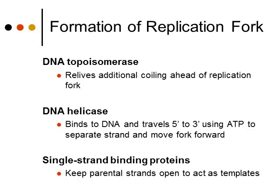Each origin of replication forms a replication bubble where the two DNA strands separate, with two replication forks on each side of the bubble. At the replication fork, there are three important types of proteins. Right ahead of the replication fork, we have an enzyme called DNA topoisomerase. DNA topoisomerase relieves something called supercoiling, straightening out the DNA in order to allow the other proteins to come in and help with the replication fork.